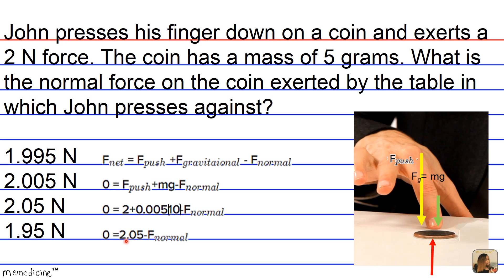So 2.05 newtons minus F normal is equivalent to zero. And if we add the normal force to both sides, eliminating it on the right-hand side and adding it to the left-hand side, we get that F normal is equivalent to 2.05 newtons.